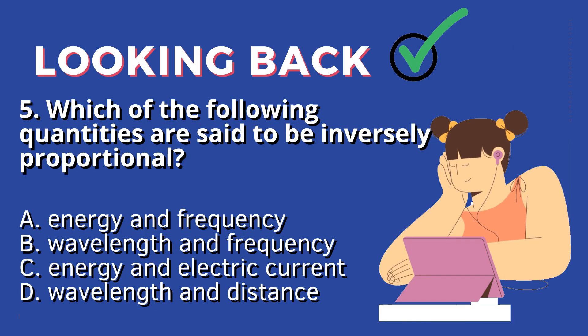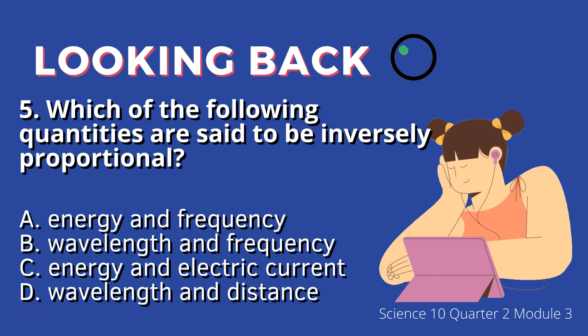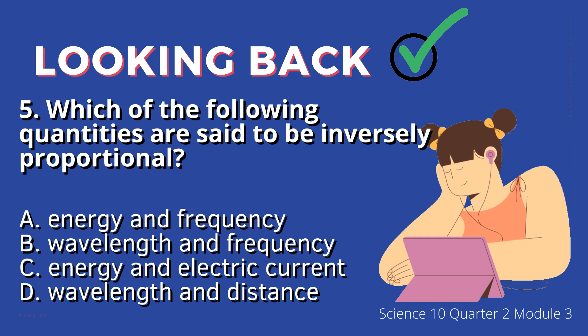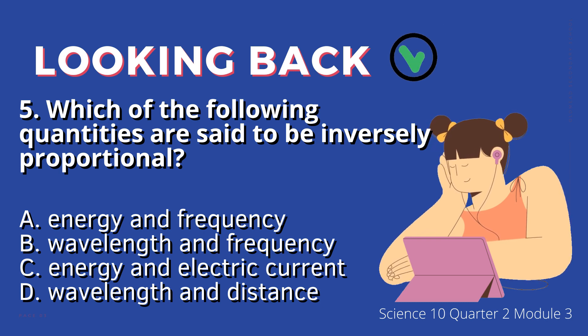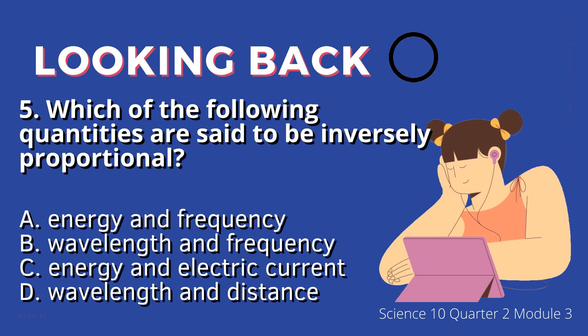5. Which of the following quantities are said to be inversely proportional? A. Energy and frequency, B. Wavelength and frequency, C. Energy and electric current, D. Wavelength and distance.